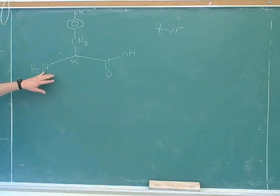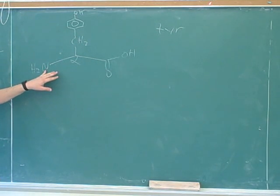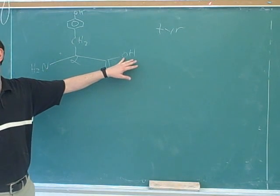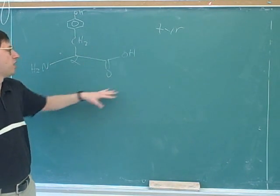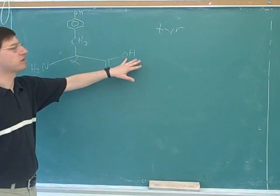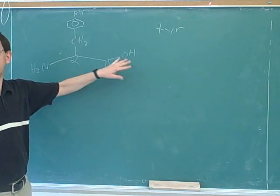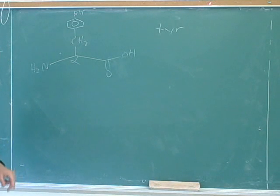What type of functional group is this? Is that basic? Yes. That means it has two different forms: protonated and non-protonated. What type of functional group is this — the whole group? So this is not an alcohol, it's a carboxylic acid, and this is acidic, so it has two different forms.